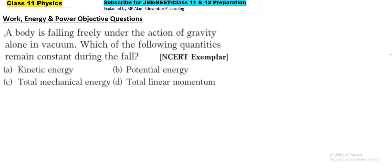A body is falling freely under the action of gravity alone in vacuum. Which of the following quantities remain constant during the fall? So I am going to use a body, a ball, and this is the earth and this is the body. This is the free fall motion. This means gravity is going to pull its own way.